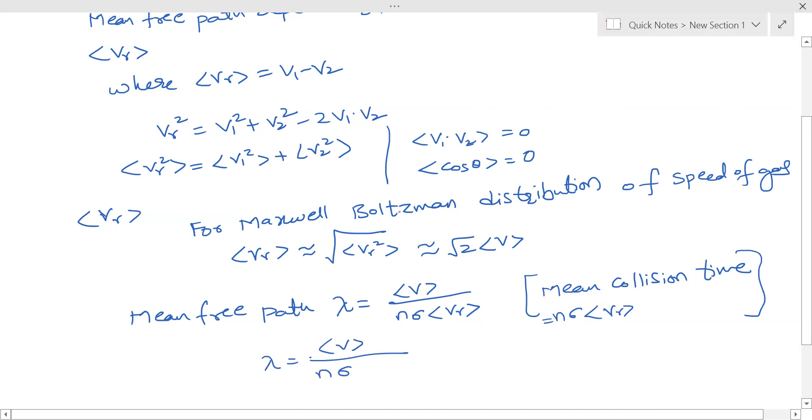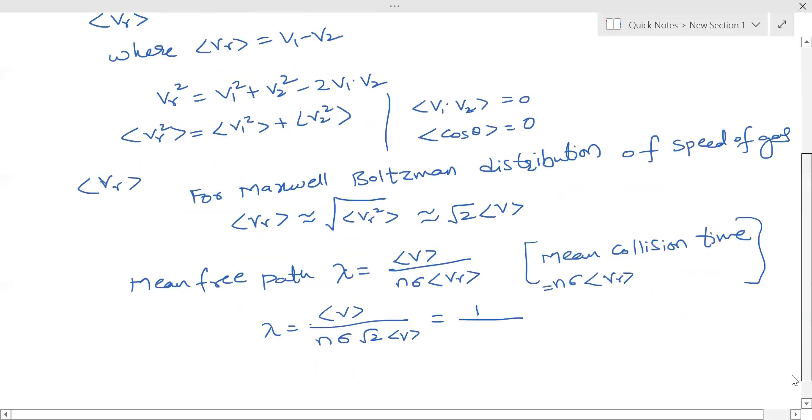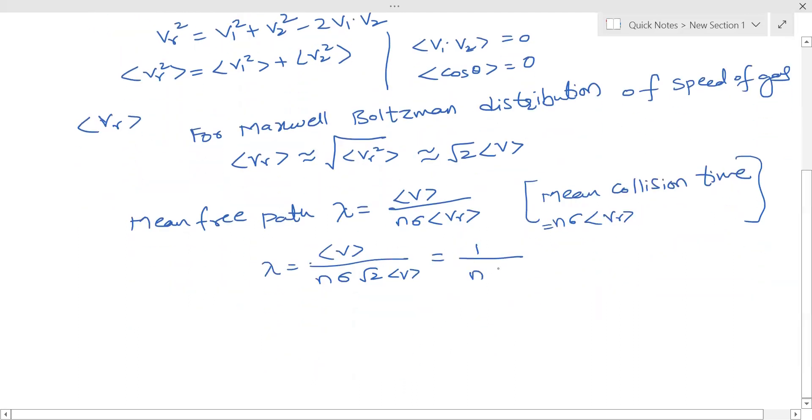And for Maxwell-Boltzmann distribution, this value is approximately equal to root 2 times v. So we end up with mean free path lambda equal to 1 over root 2 n sigma.